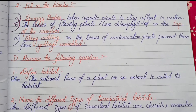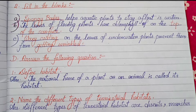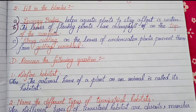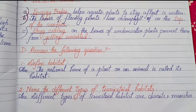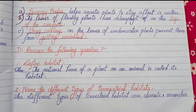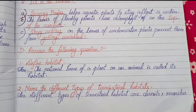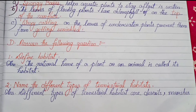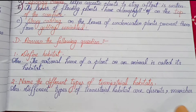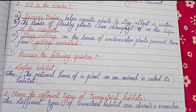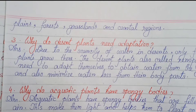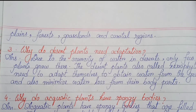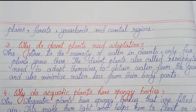Question-answer section. Number one: define habitat. The natural home of a plant or animal is called its habitat. Number two: name the different types of terrestrial habitats. The different types of terrestrial habitats are deserts, marshes, plains, forests, grasslands, and coastal regions.